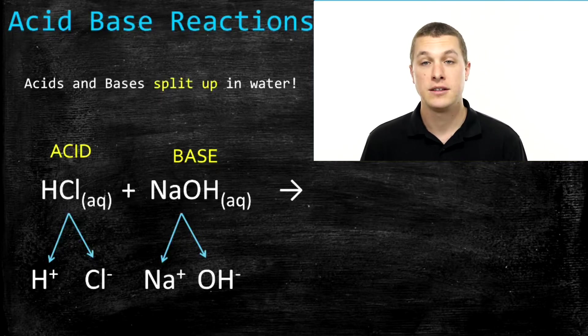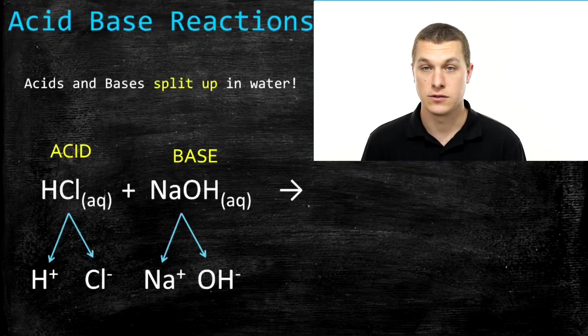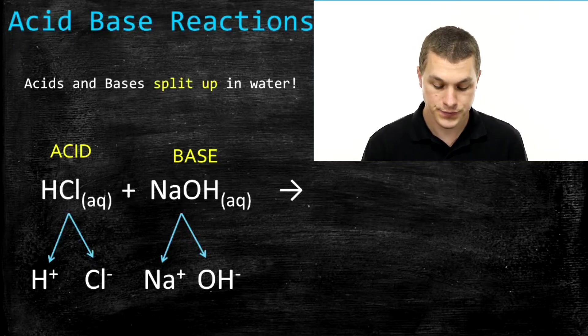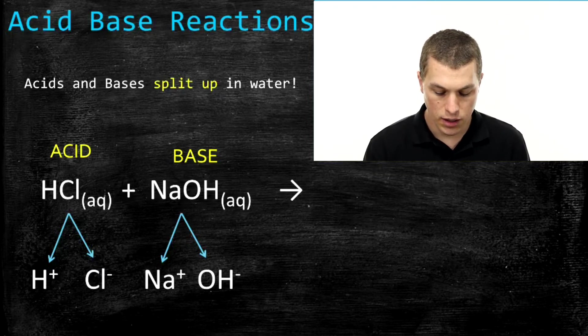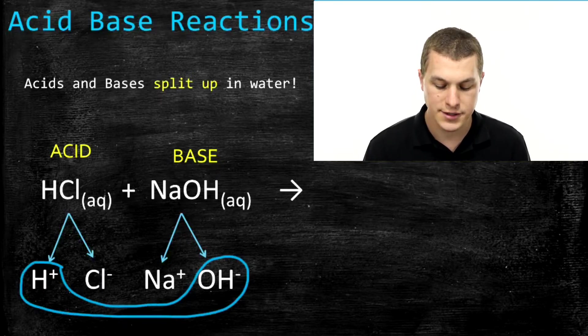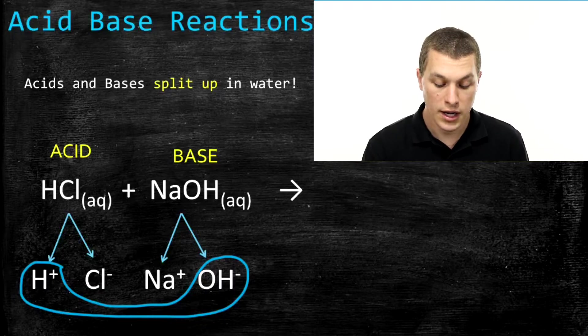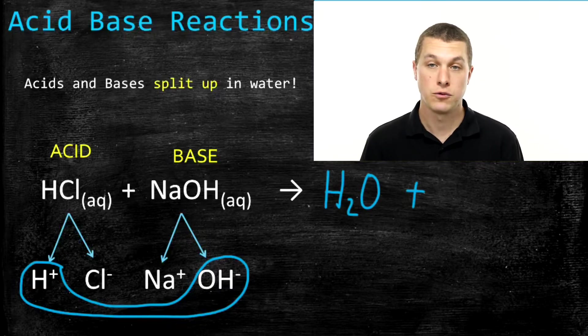Remember that when I put HCl into solution, it splits up into hydrogen ions and chlorine ions. When I put sodium hydroxide into solution, it splits up into sodium ions and hydroxide ions. It turns out that the hydroxide ions combine with the hydrogen ions. When they do that, you get one oxygen and two hydrogens, and that turns out to be water. Water is not an ionic compound, so you have these two ions combining to make water, which is a molecular compound. Whenever you combine an acid or base, one of your products is water.